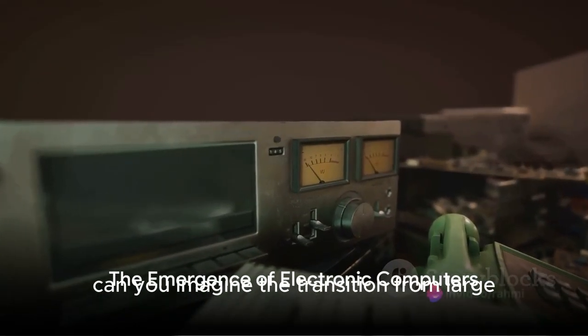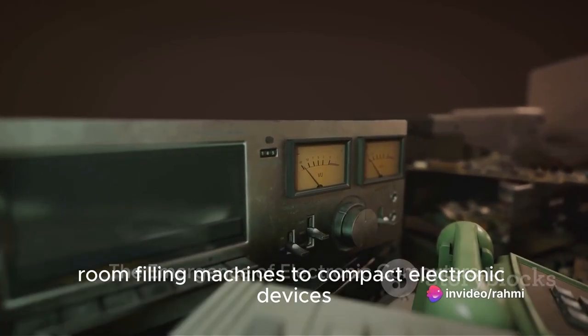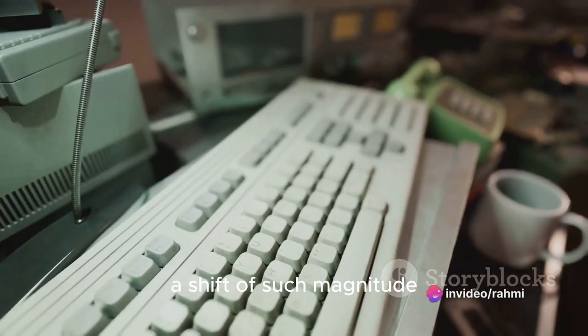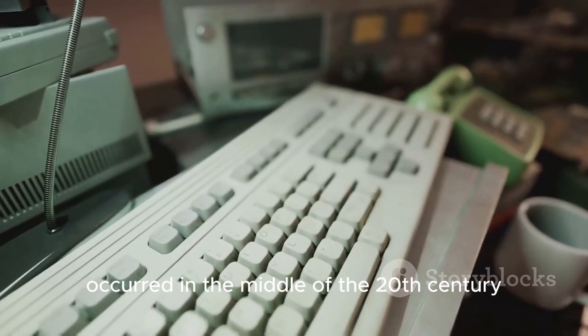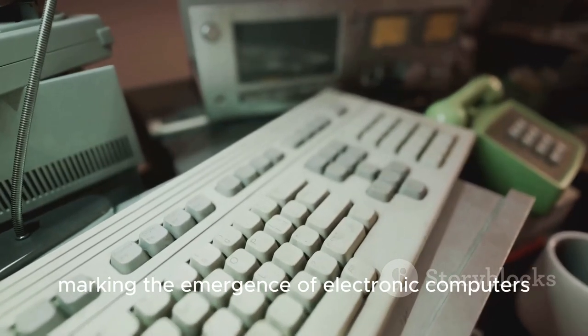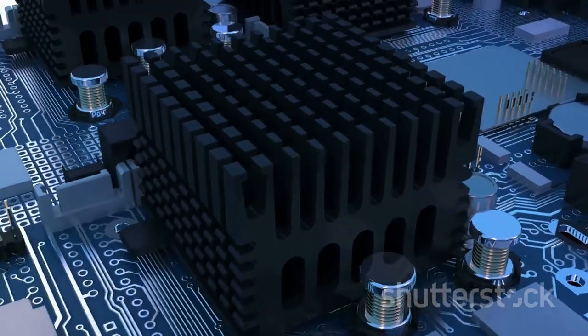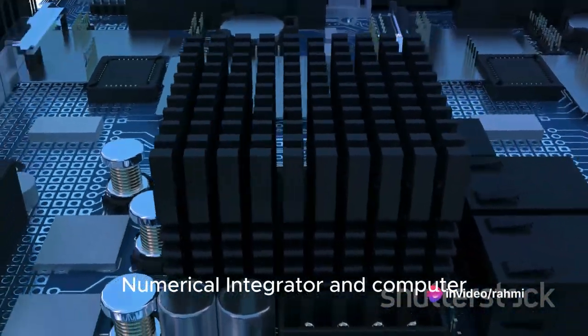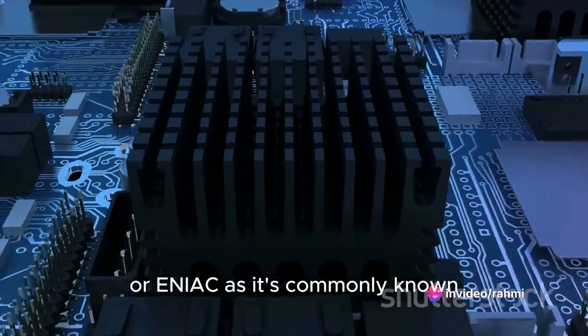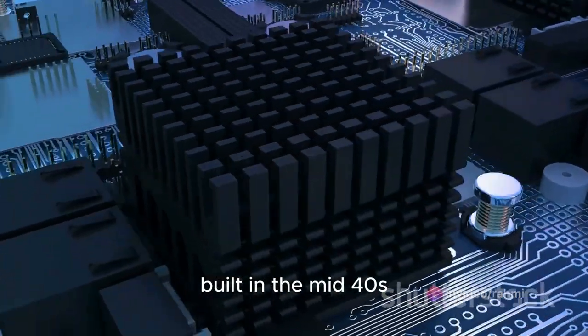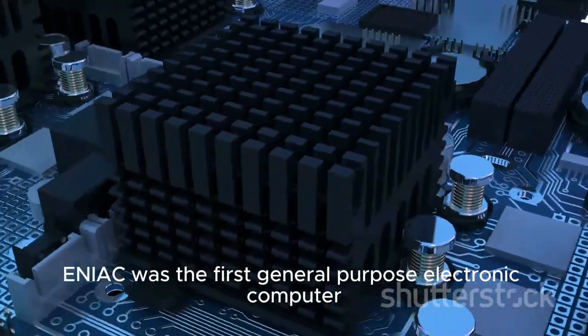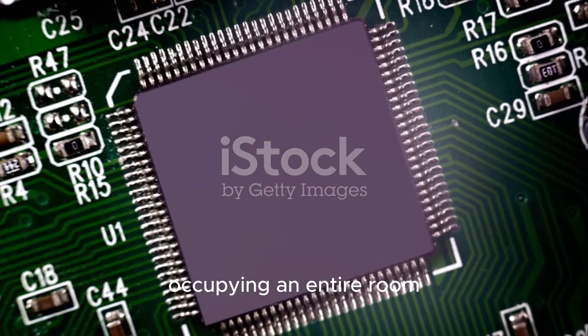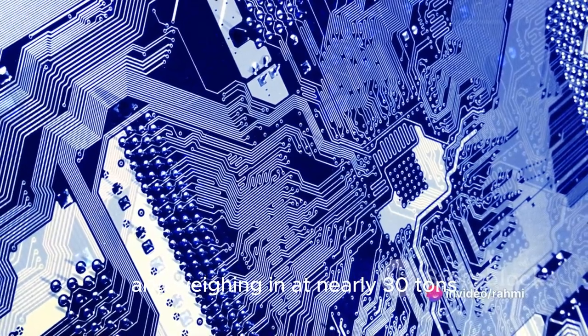Can you imagine the transition from large room-filling machines to compact electronic devices? A shift of such magnitude occurred in the middle of the 20th century, marking the emergence of electronic computers. At the heart of this revolution was the Electronic Numerical Integrator and Computer, or ENIAC, as it's commonly known. Built in the mid-40s, ENIAC was the first general purpose electronic computer. It was a behemoth, occupying an entire room and weighing in at nearly 30 tons.